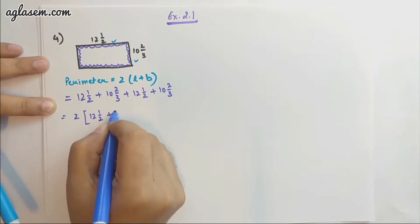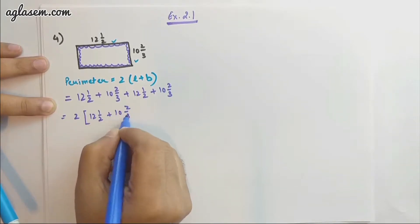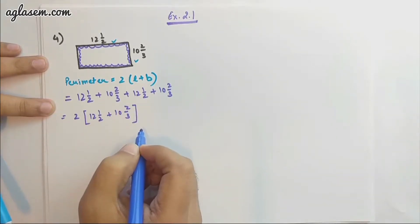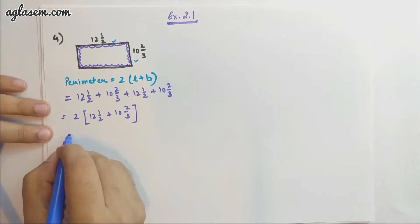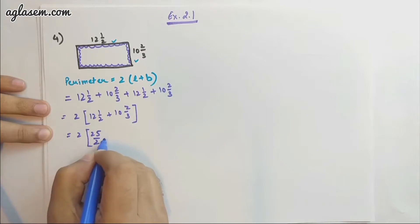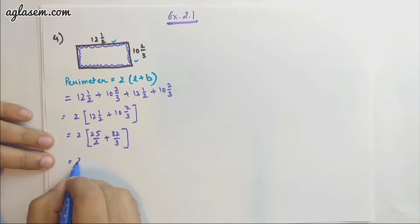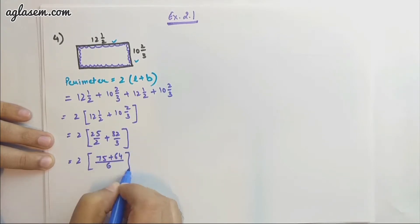12 1/2 is 25/2 plus 10 2/3 is 32/3. If we take the LCM, that comes out to be 6. Here we'll have 75, that is 25 × 3, plus 64. So that comes out to be 2 × (139/6).